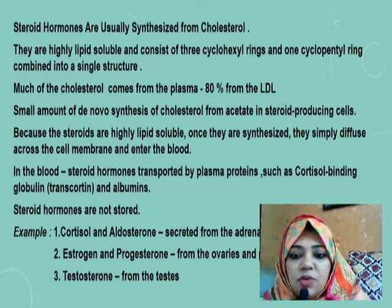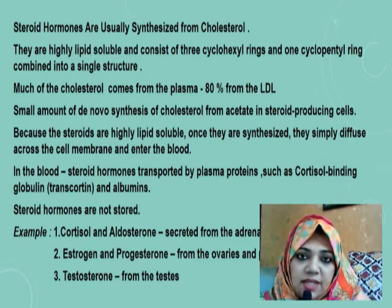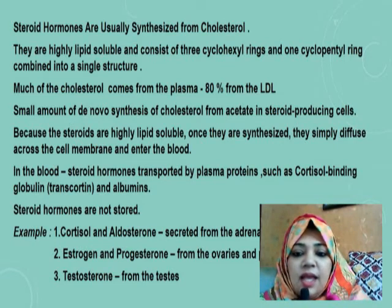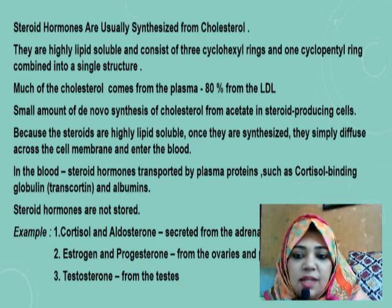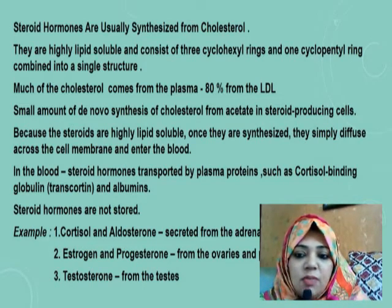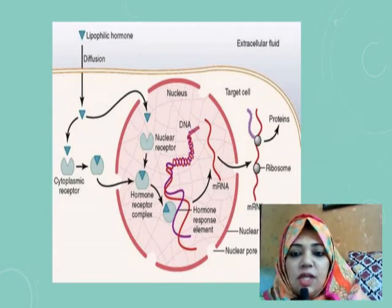Examples of steroid hormones: cortisol and aldosterone are secreted from the adrenal cortex; estrogen and progesterone from the ovaries and also from the placenta during pregnancy; and testosterone from the testis. So steroid hormones are secreted from the adrenal cortex and the gonads.